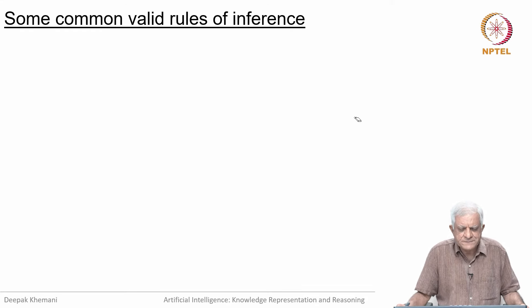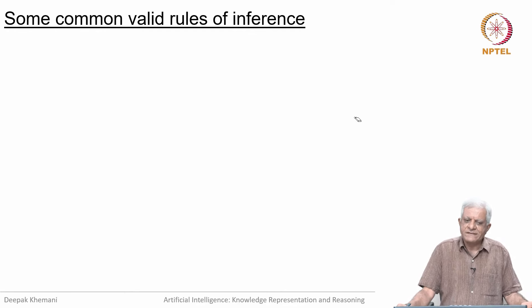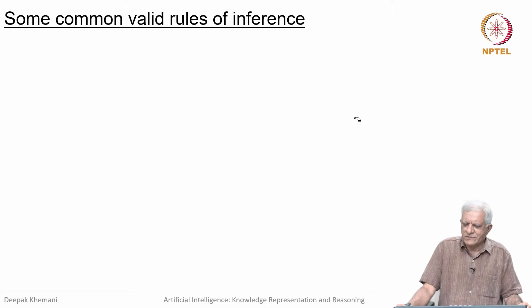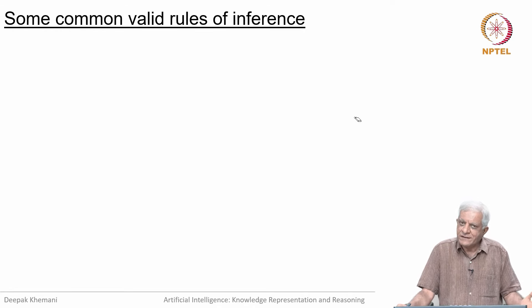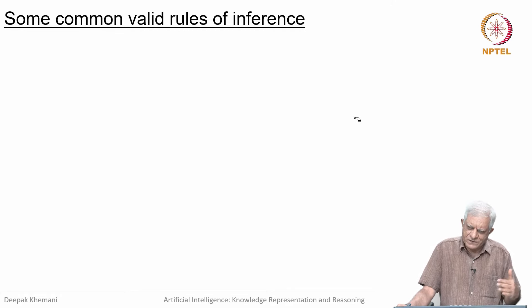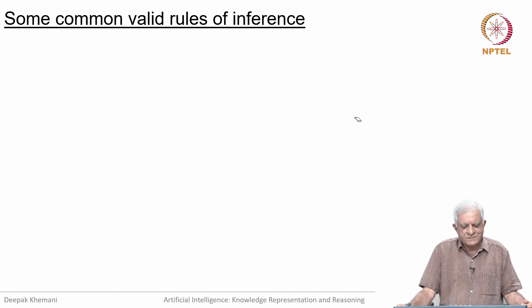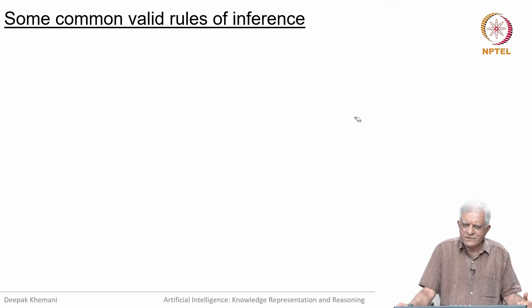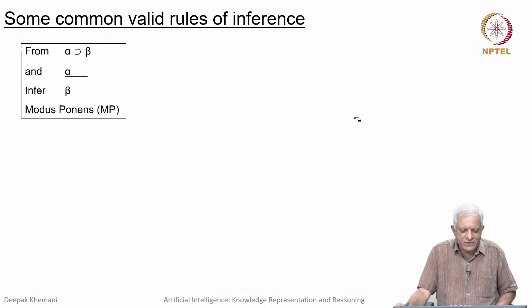Welcome back. We have been looking at patterns of reasoning — patterns of valid forms of inference or sound rules of inference. We have seen two rules so far: modus ponens, which we showed is sound by constructing the truth table for the implication and finding it was a tautology. We also saw abduction, which we can show is not sound. There are many rules of inference which logic uses, so let us quickly look at some of them.